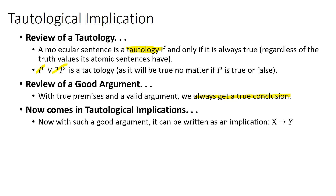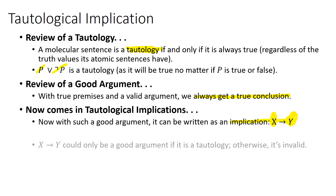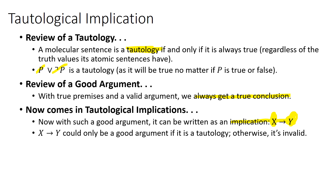Now let's say we have a good argument. With such a good argument, it can be written as an implication: if X then Y, or put differently, X implies Y, where X, the antecedent, basically contains the premises of the argument and puts those premises in a conjunctive relation. The consequent, or Y, is the conclusion. So the entire argument — premises and the conclusion — is put into one big molecular sentence. X implies Y could only be a good argument if it is a tautology. Otherwise, it's actually invalid.